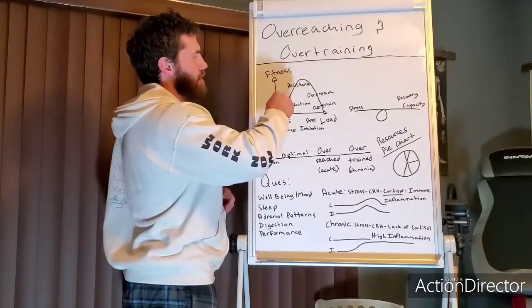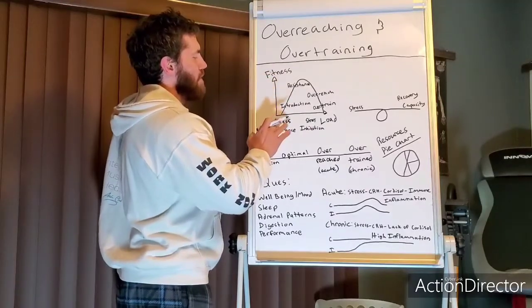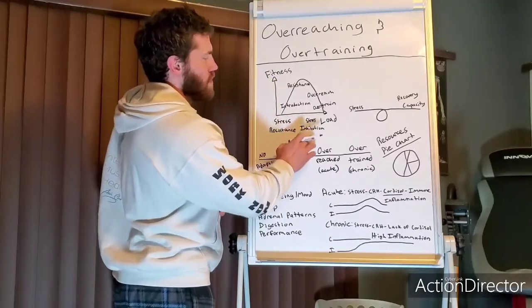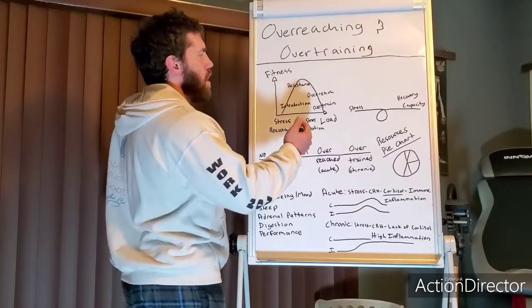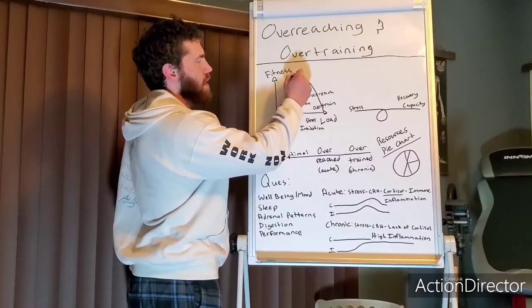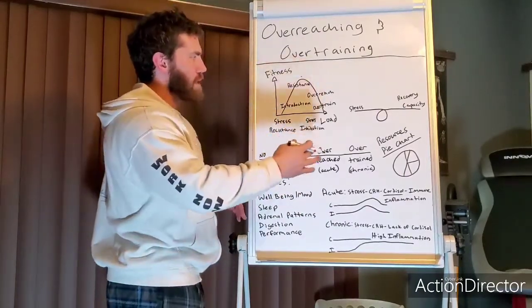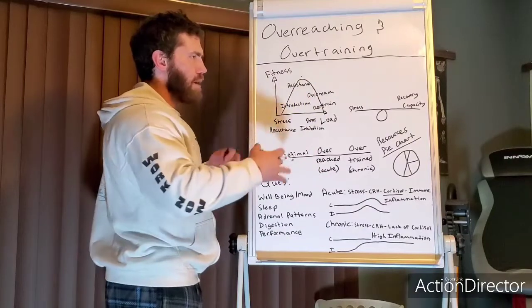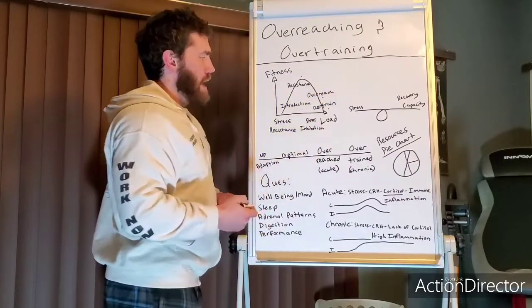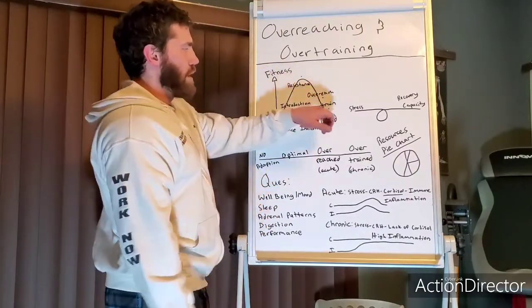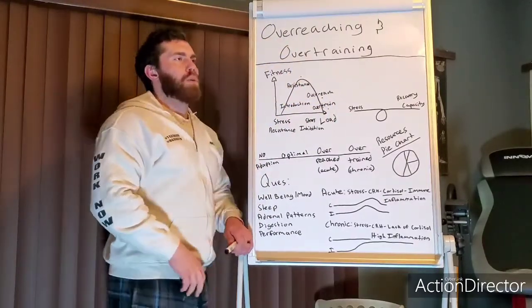Looking at this like an upside-down U, we have stress resistance or inhibition load on one axis and fitness on the other. There's a spot here where we're in the optimal zone — right amount of resistance, right amount of recovery — we're not over here in the overreached zone, and we're not clear over here in the overtraining zone. We want to be somewhere up in that optimal range.